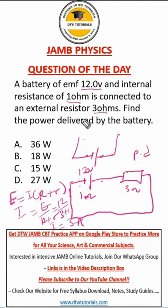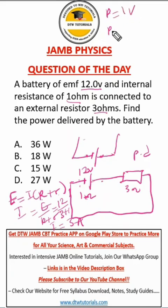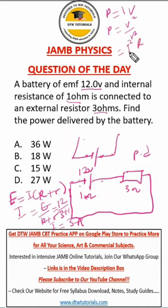We're not stopping there, because we're looking for the power delivered. Remember our formula for power: power is either P = IV, or P = V²/R, or P = I²R. I think the best formula to use here is I²R. We have our current — that's the formula we use.